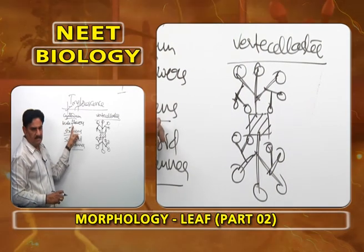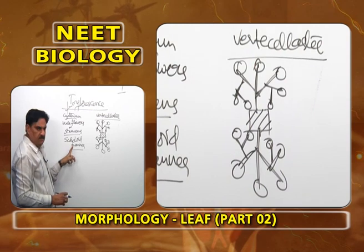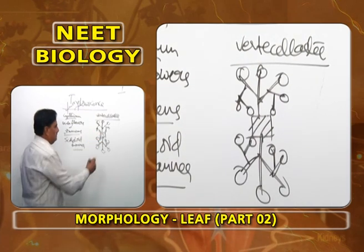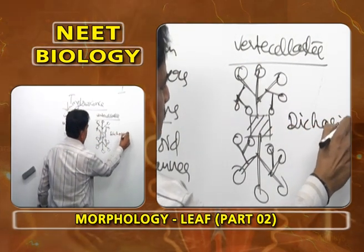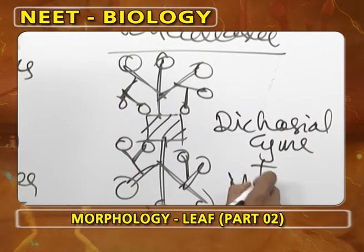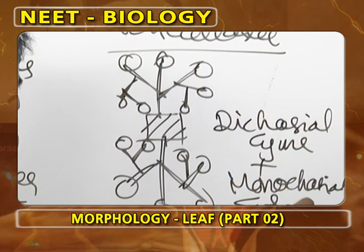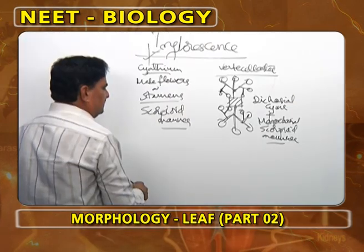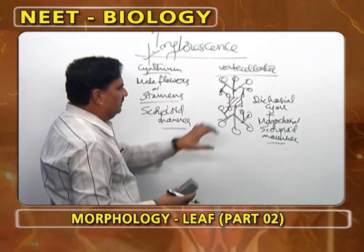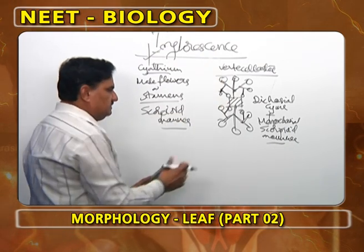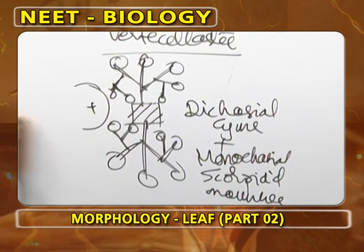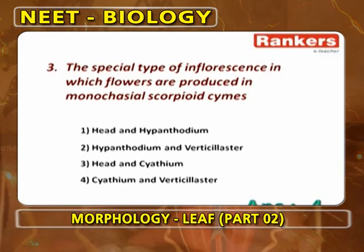In Cyatheum, male flowers or stamens are definitely arranged in monocasial scorpioid manner. In Verticeloster, actual inflorescence is a dichasial cyme and the remaining flowers are arranged in monocasial scorpioid manner. In every verticeloster, at each node the total number of flowers is seven on one side and seven on the other side — so fourteen flowers are present at each node. The number of flowers in the verticel of Leucas is fourteen.